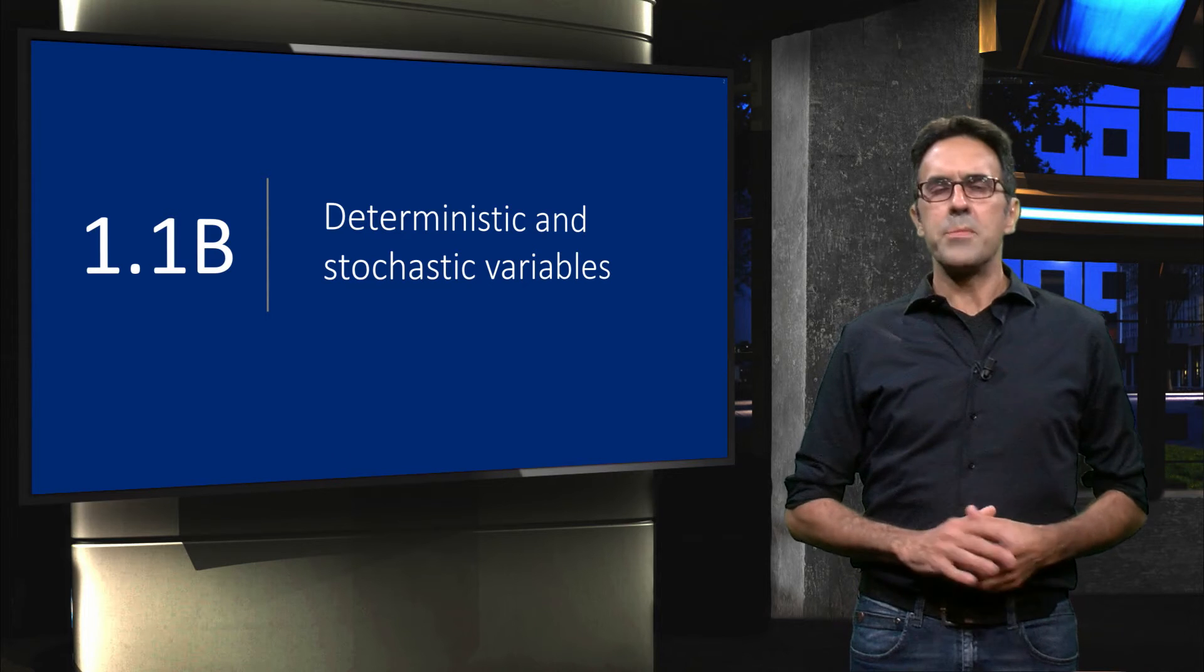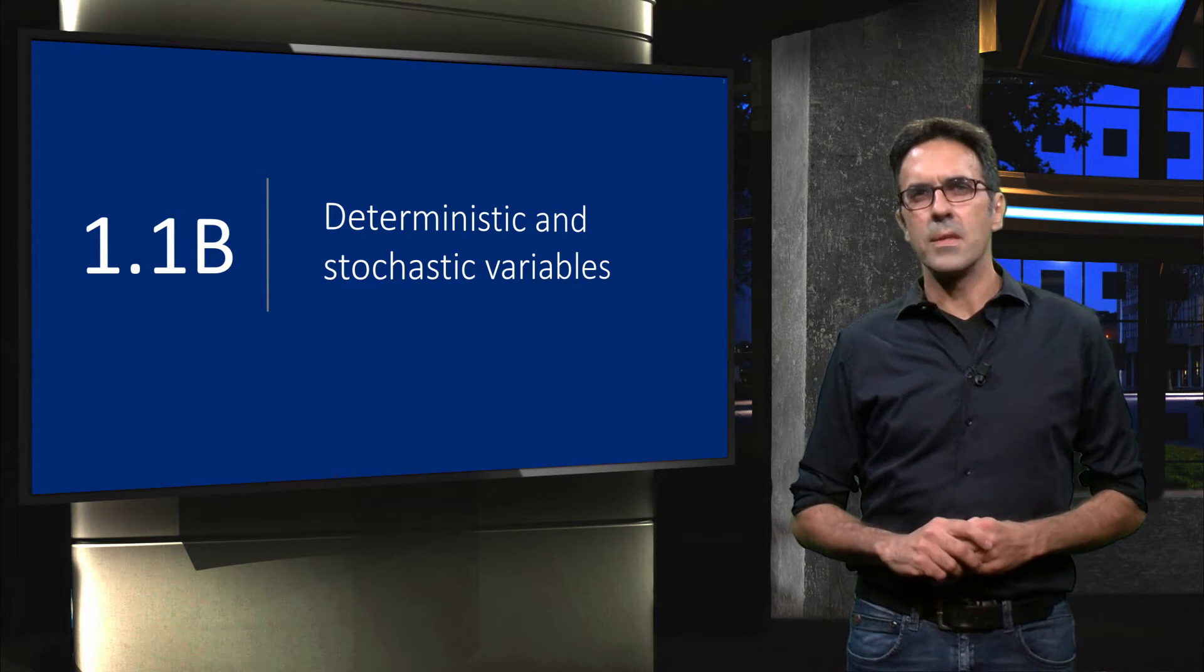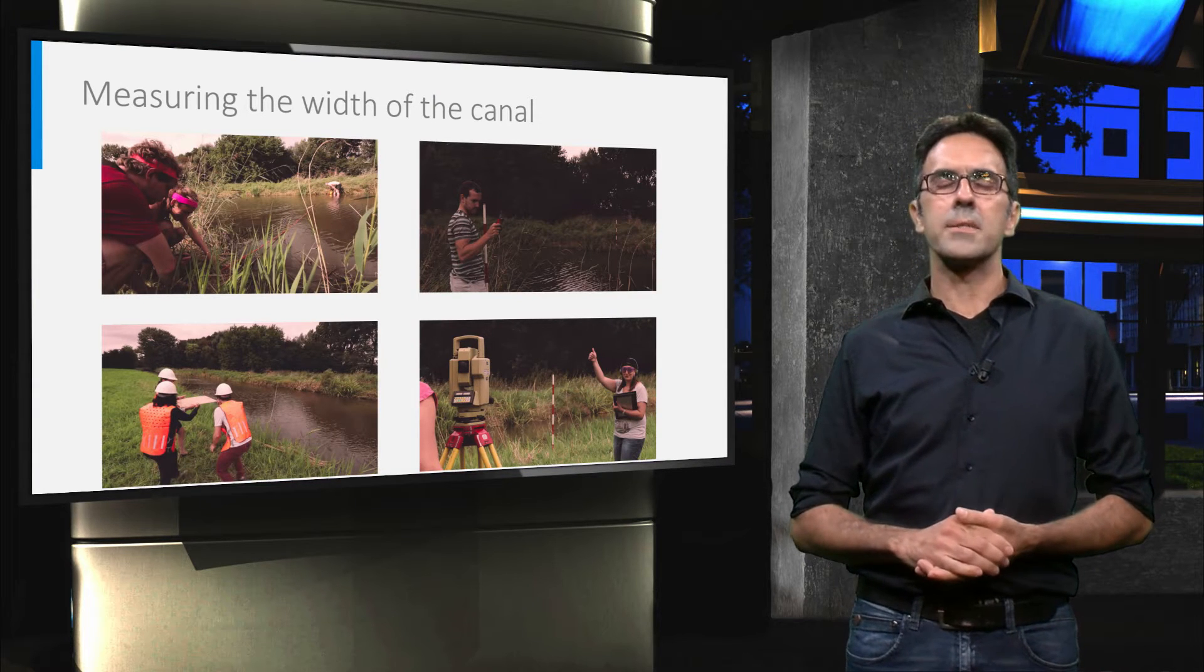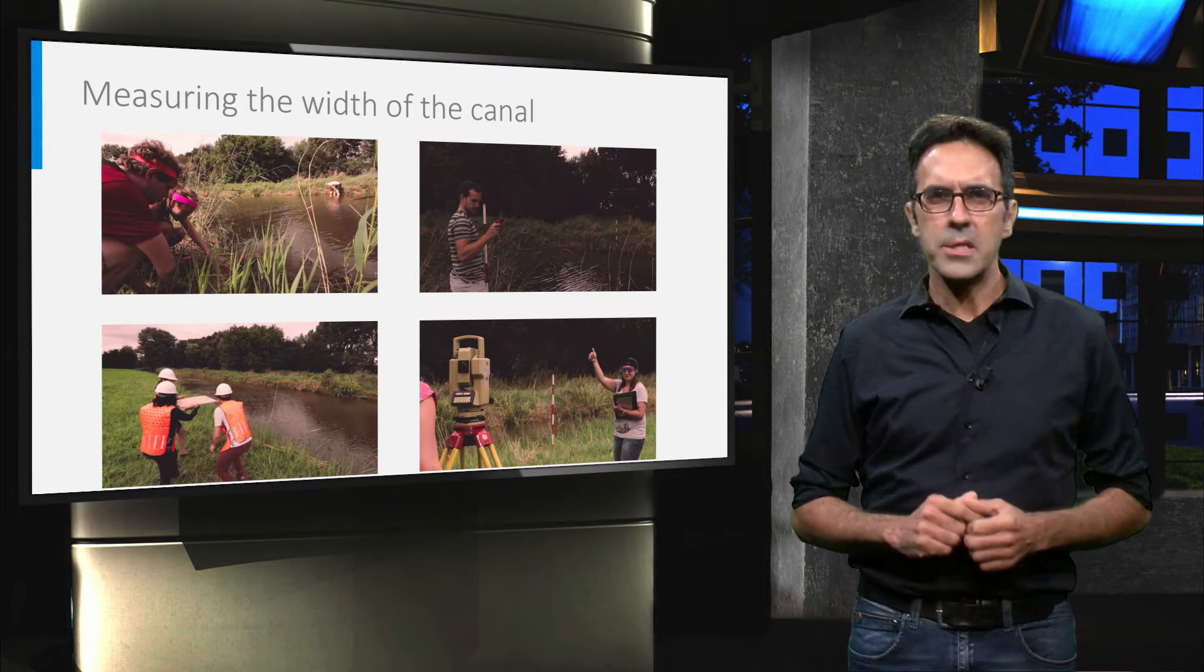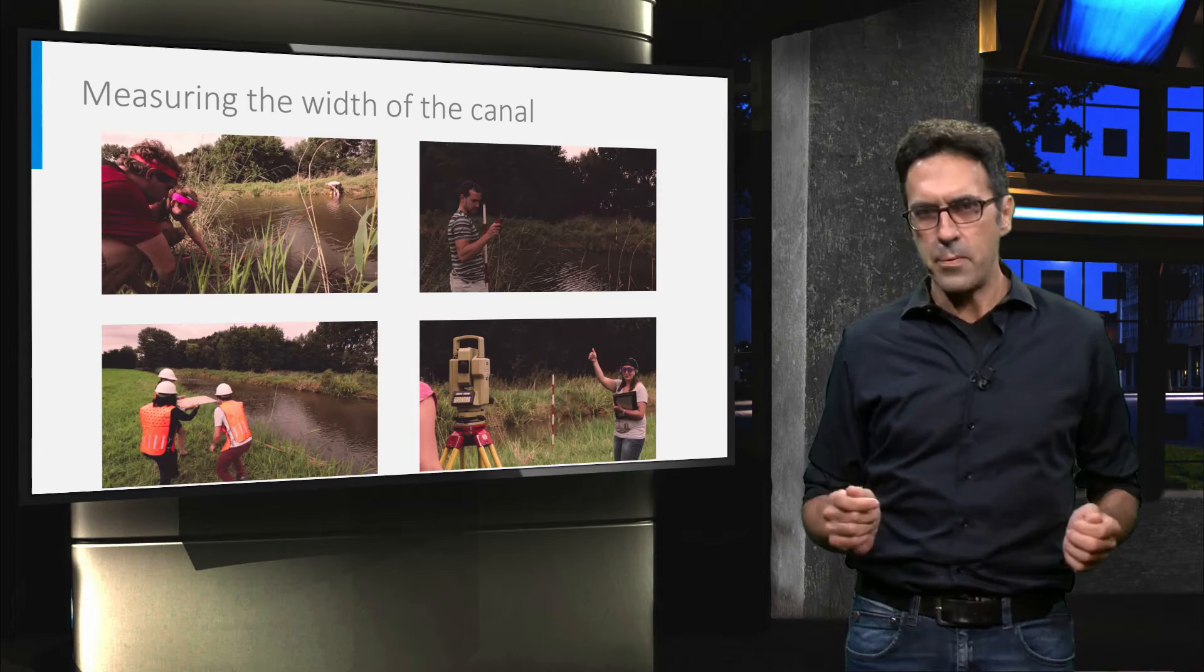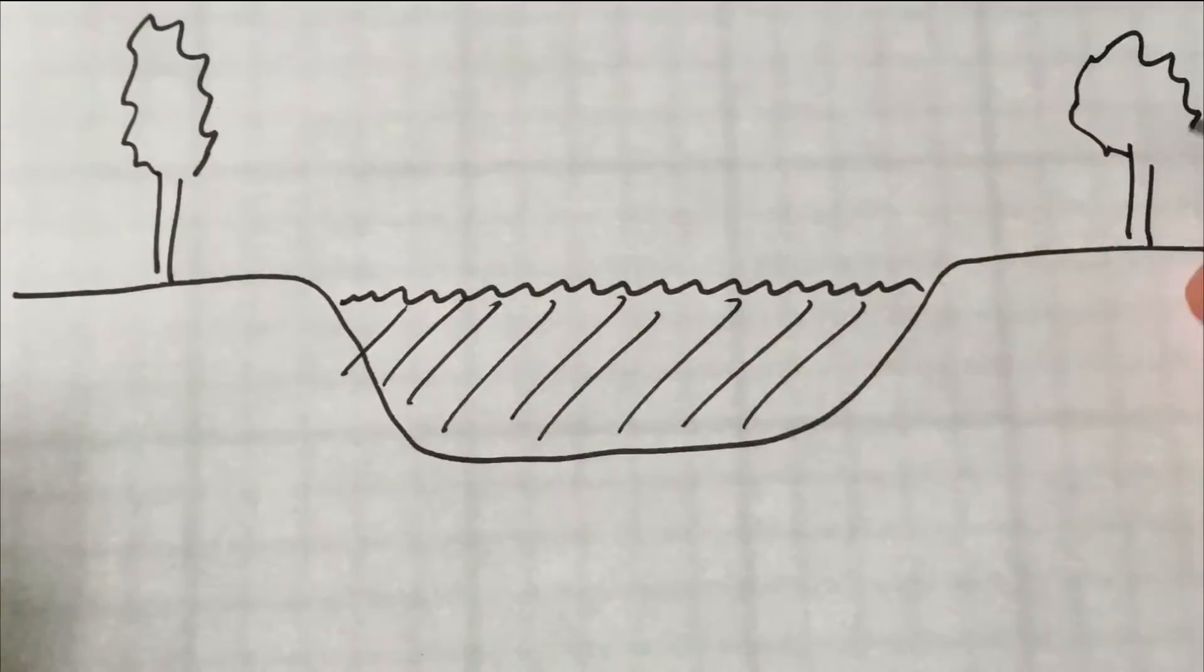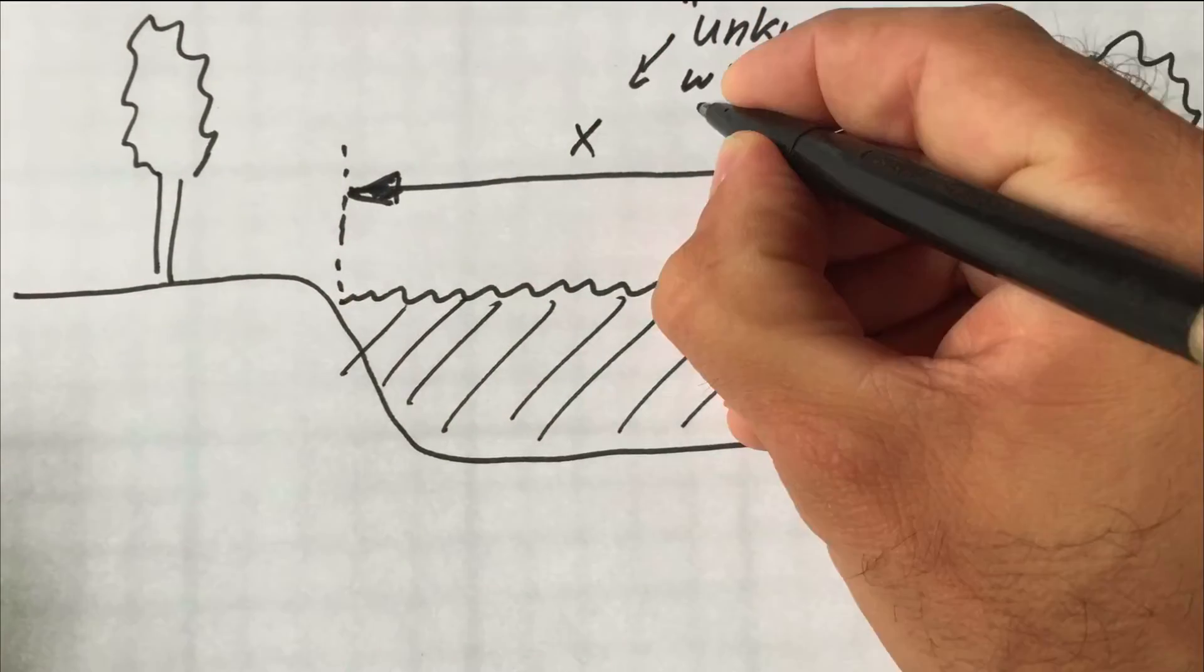We will distinguish two types of variables, deterministic ones and stochastic ones. Again, we start with our problem of measuring the width of the canal using different techniques. Let's start defining the mathematical model by sketching our problem on a piece of paper. We draw a cross-section of the canal and insert the unknown parameter denoted by the letter X.